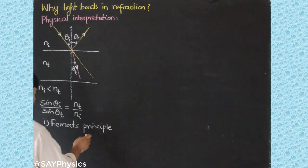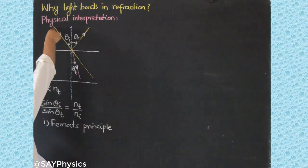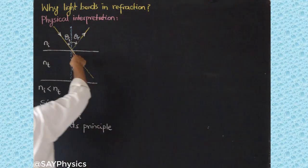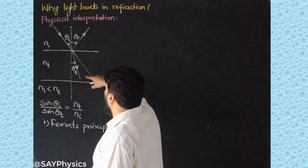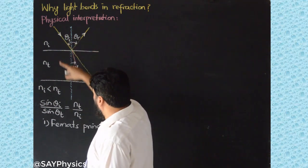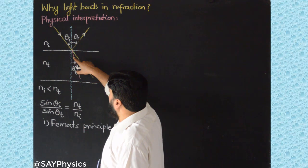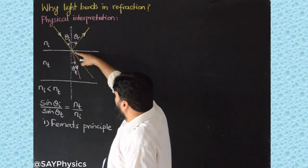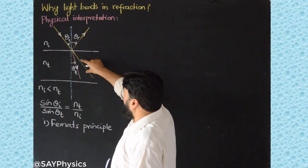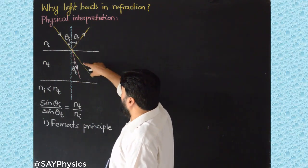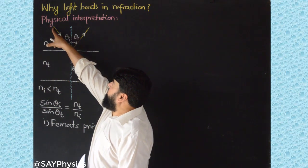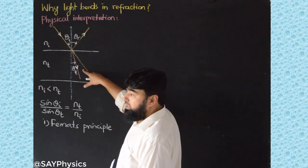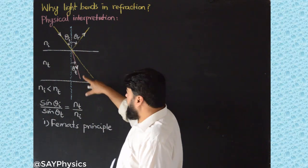In Fermat's Principle actually Snell's law is incorporated and the shortest distance is calculated. This principle is actually based on Snell's law, showing how we can calculate the shortest distance to reach, for example a lifeguard wants to reach a person who is swimming inside water.